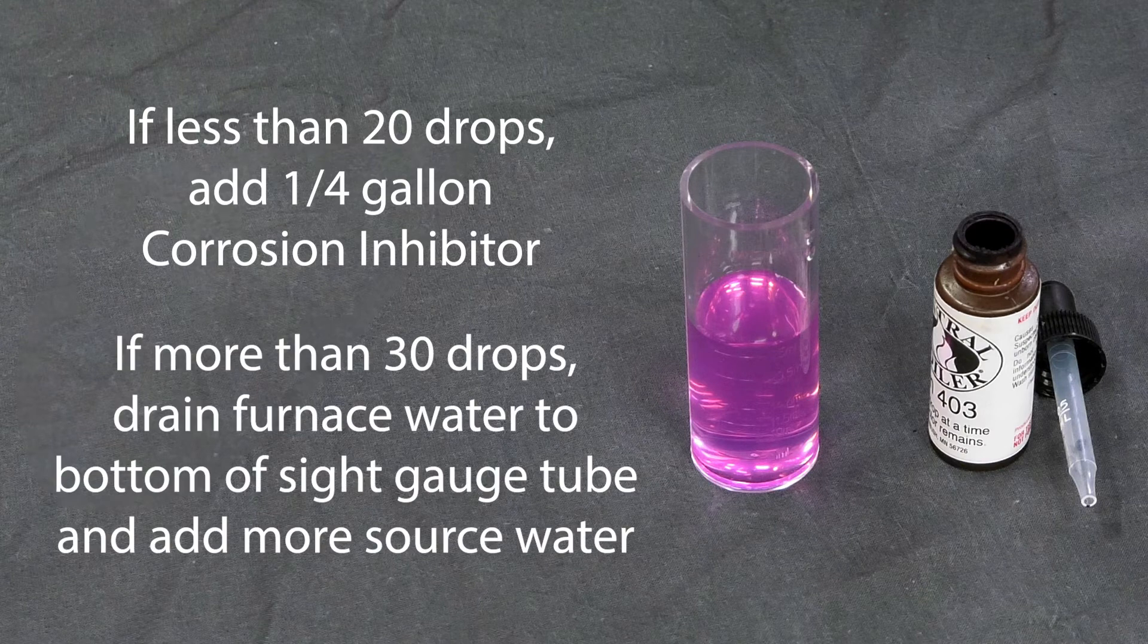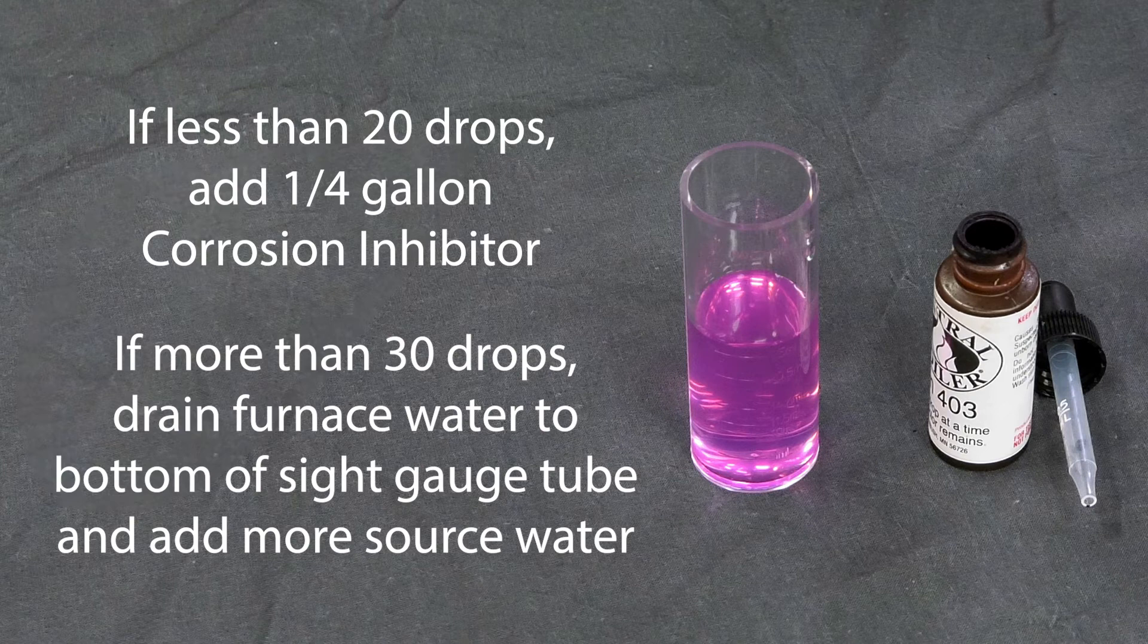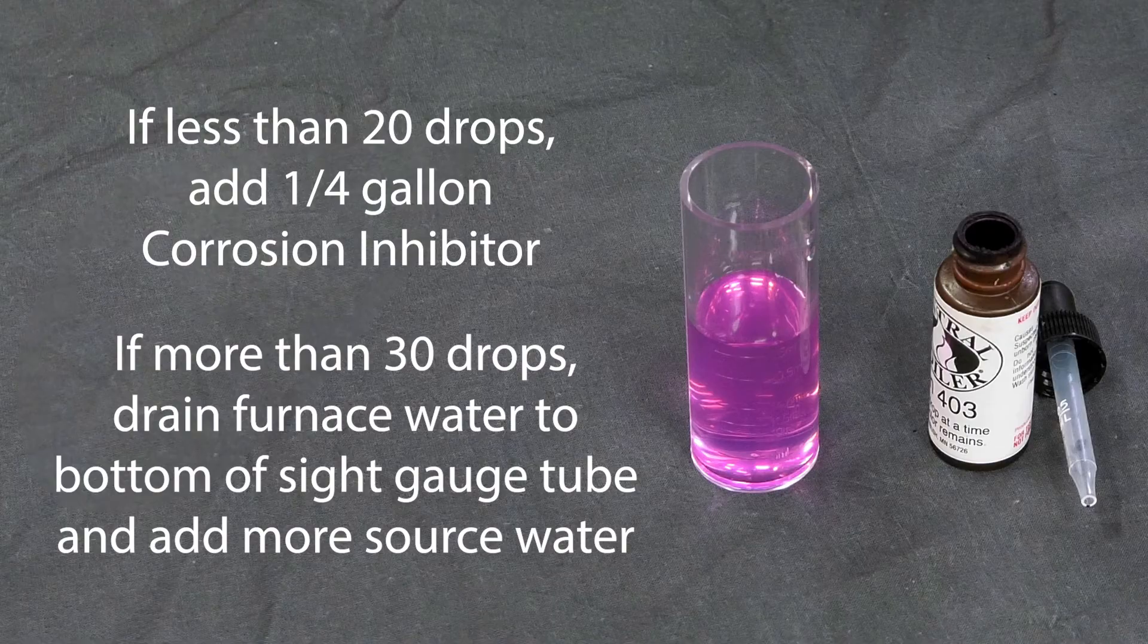If it took more than 30 drops, dilute the mixture by draining water from the system until the water level is at the bottom of the site gauge and add more source water.